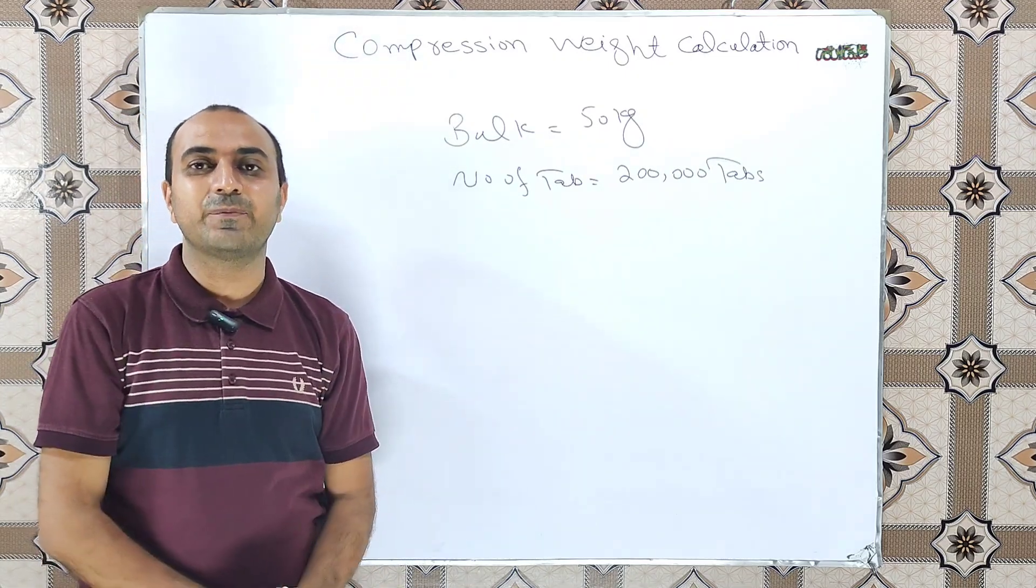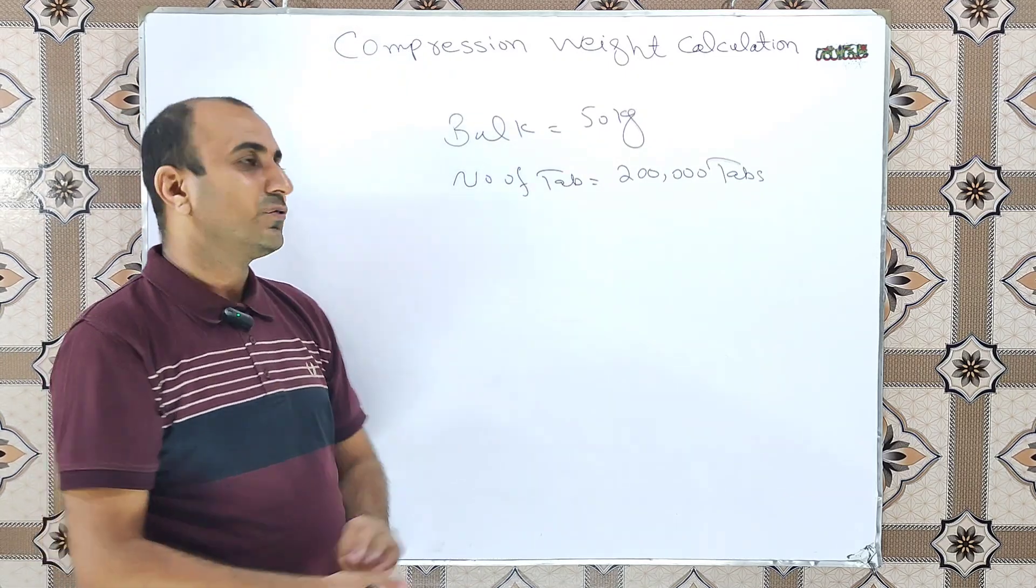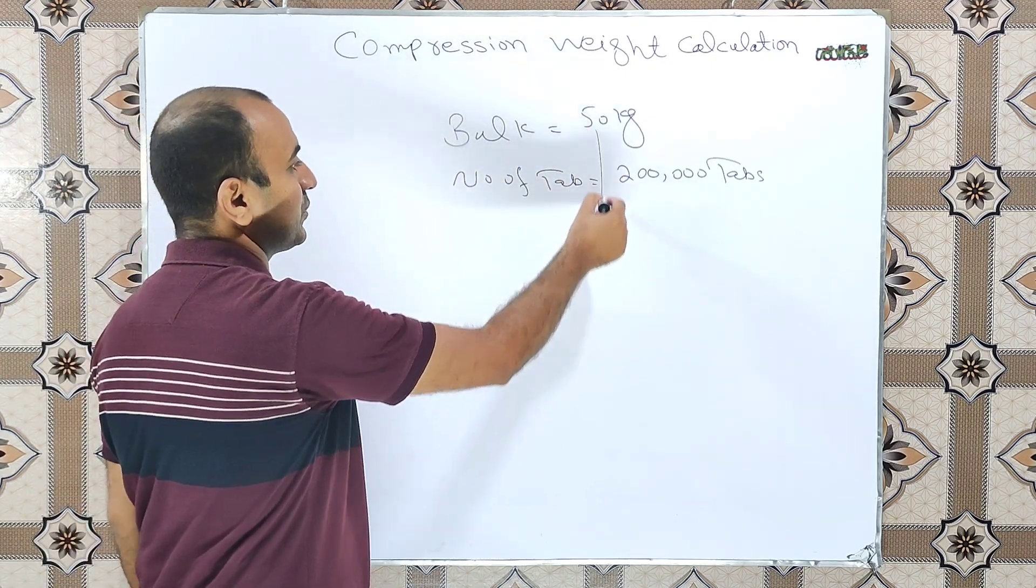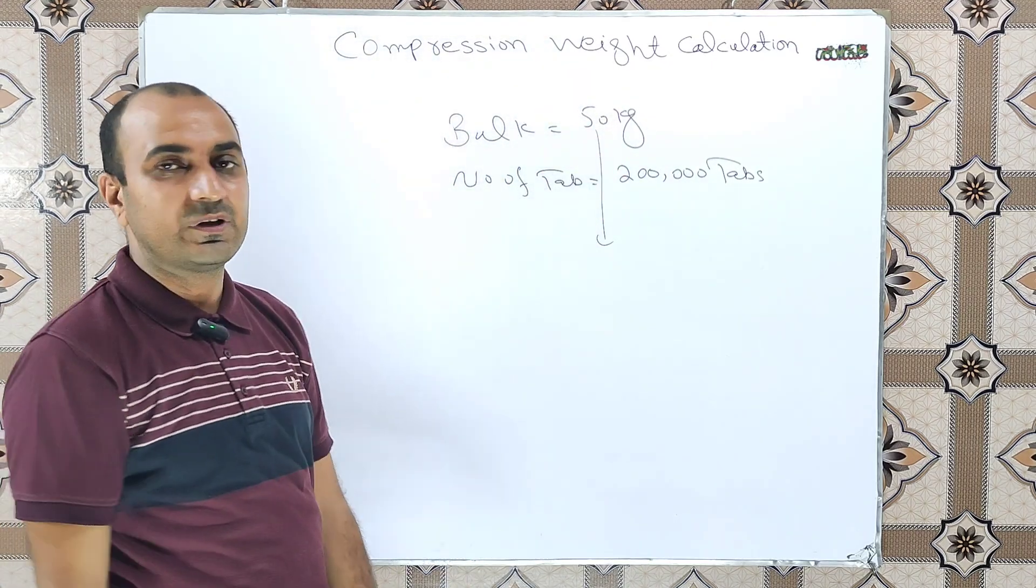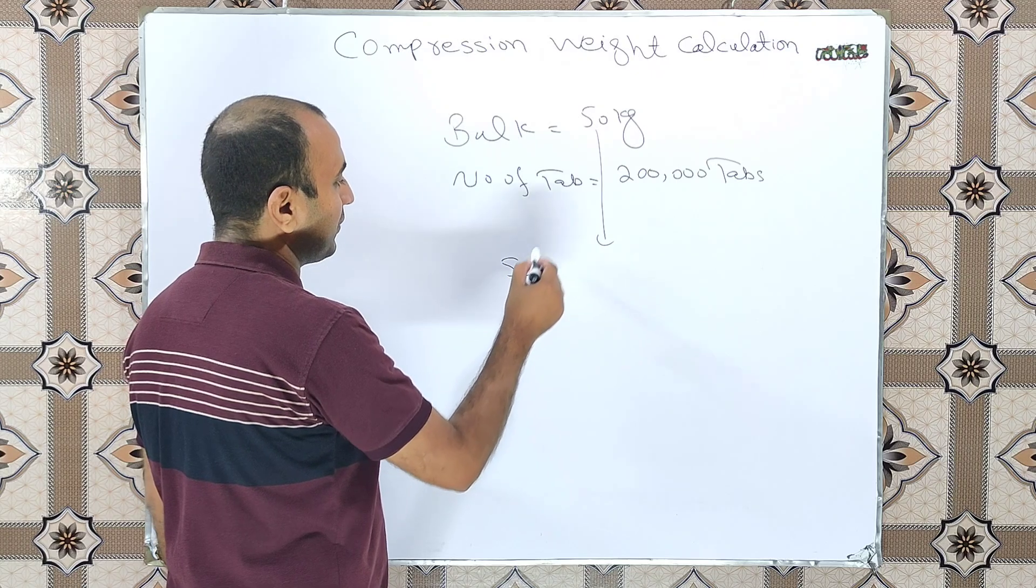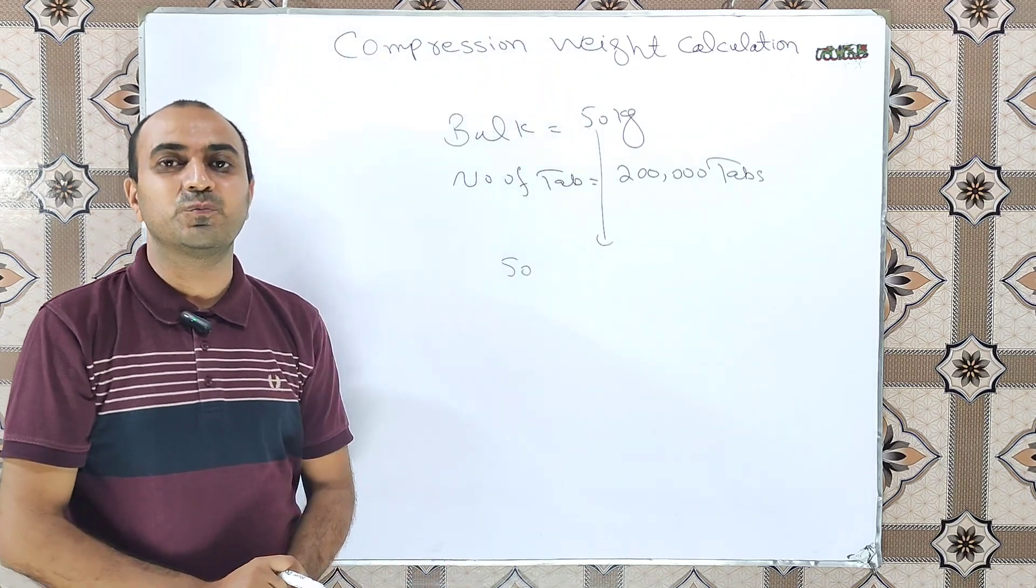We know that tablet compression weight is always in milligrams. So the first step is to convert this value into milligrams, meaning we will convert kilograms into milligrams.